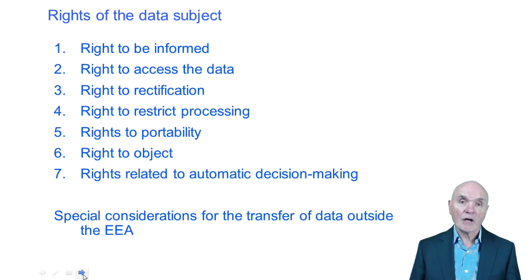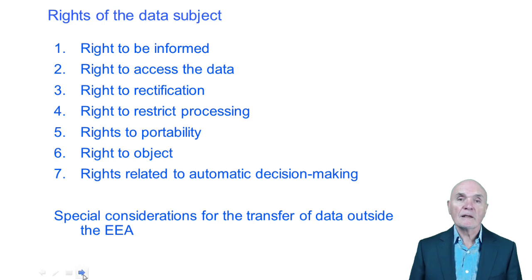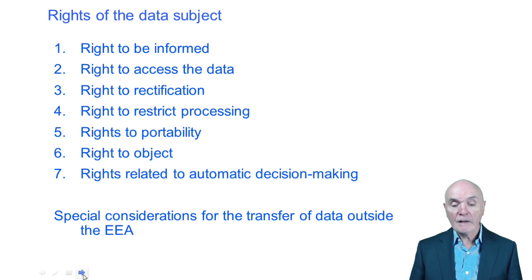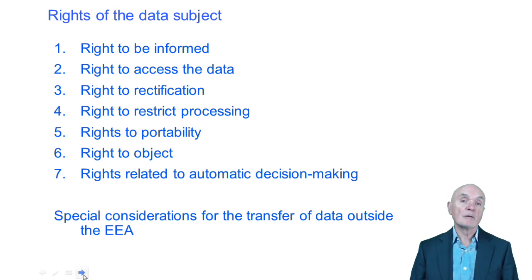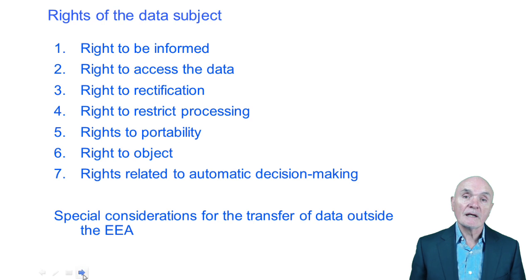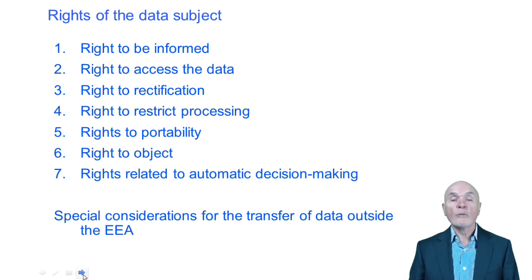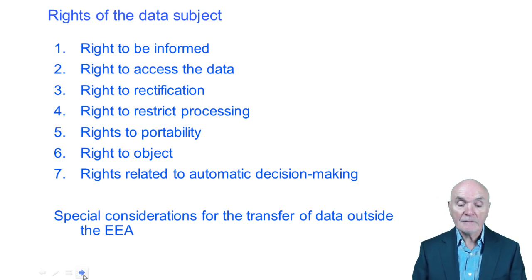We also have certain rights related to the operation of automatic decision-making. For example, if you are applying for a job and you input your qualifications, applications are sometimes initially filtered automatically. There are rights which ensure we're not unduly prejudiced by perhaps incorrect automatic decision-making made by information processing systems. There are also special considerations if data is going to be transferred outside the European Economic Area — to a jurisdiction that may be careless with the data or that lacks the same legal penalties.